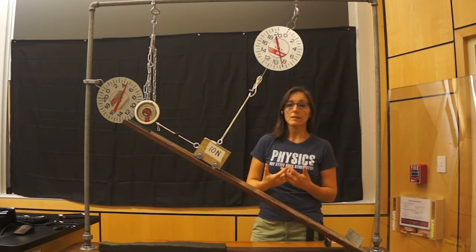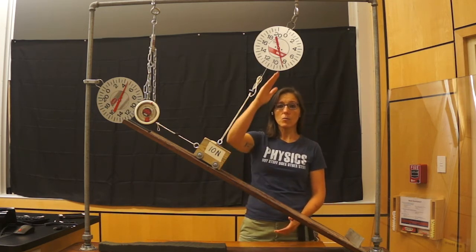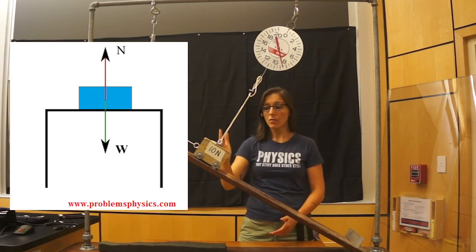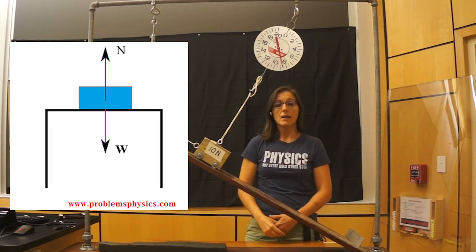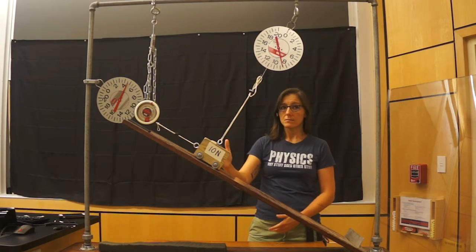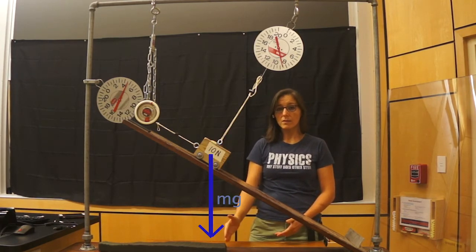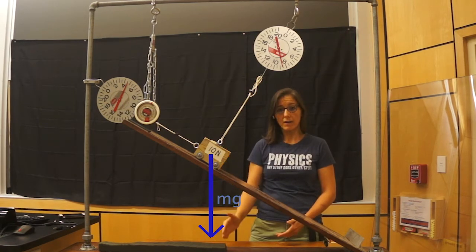What we're very used to in dealing with forces prior to inclines is that our normal force balances the weight of our object. In this particular case, the weight of our object—well, in every case—the weight of our object points towards the center of the earth or straight down.